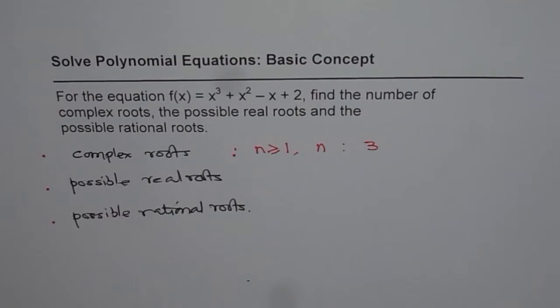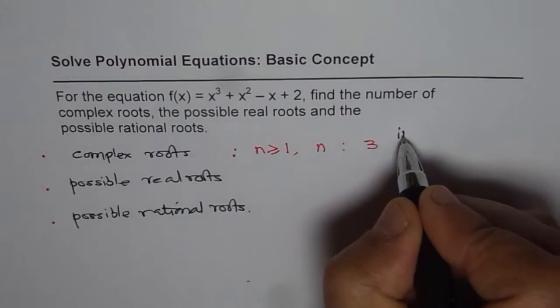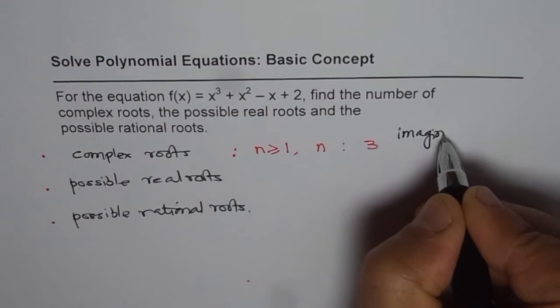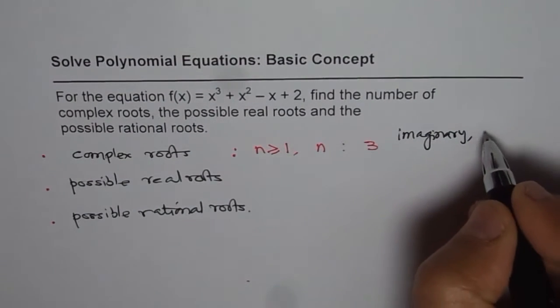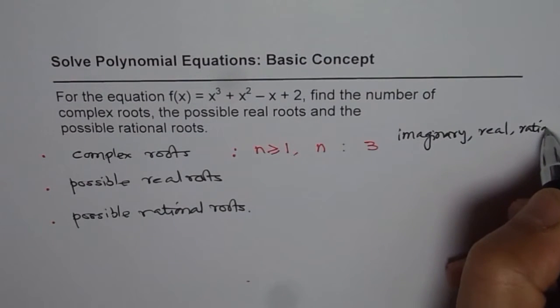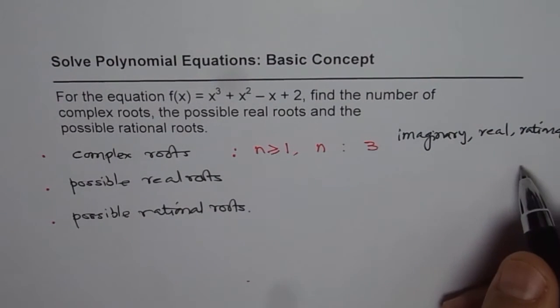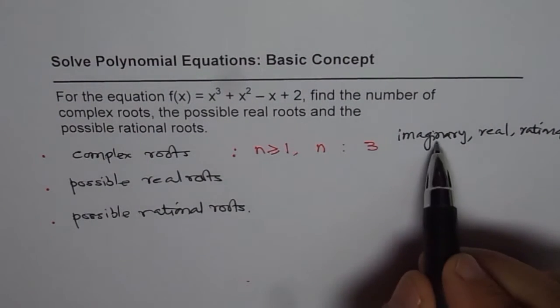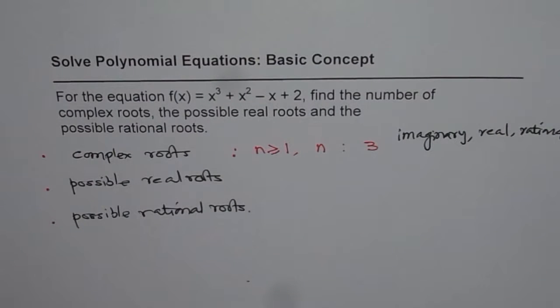Now, I find students getting confused with this because they think complex numbers are only imaginary numbers and that is the root cause. What are complex numbers? Complex numbers, yes, of course, are imaginary numbers. They also include real numbers, rational numbers. They include all the numbers, including imaginary numbers.